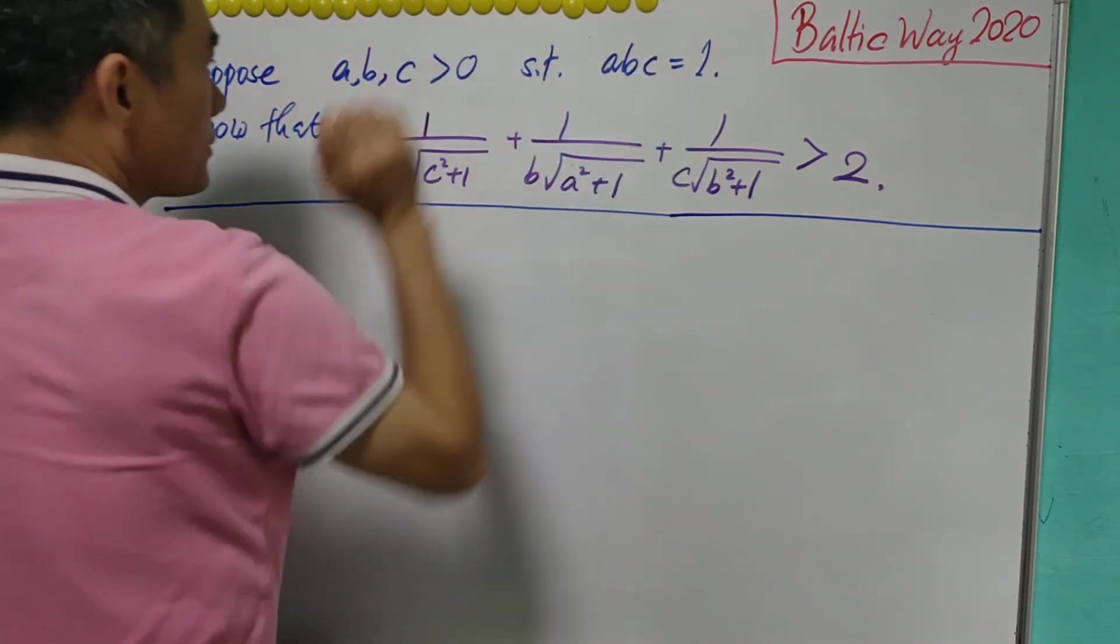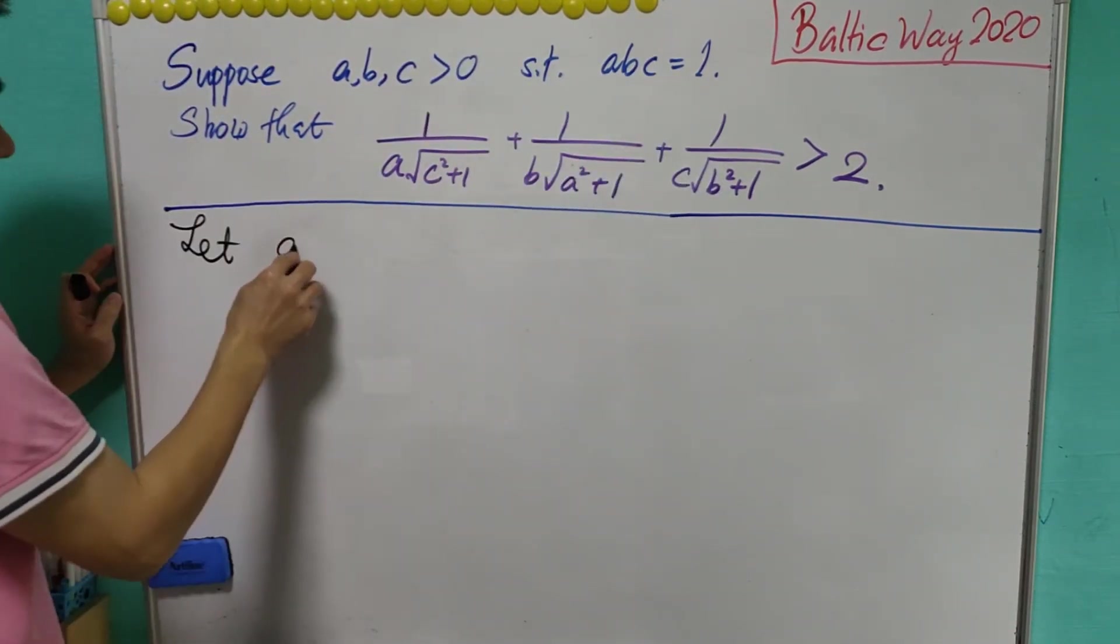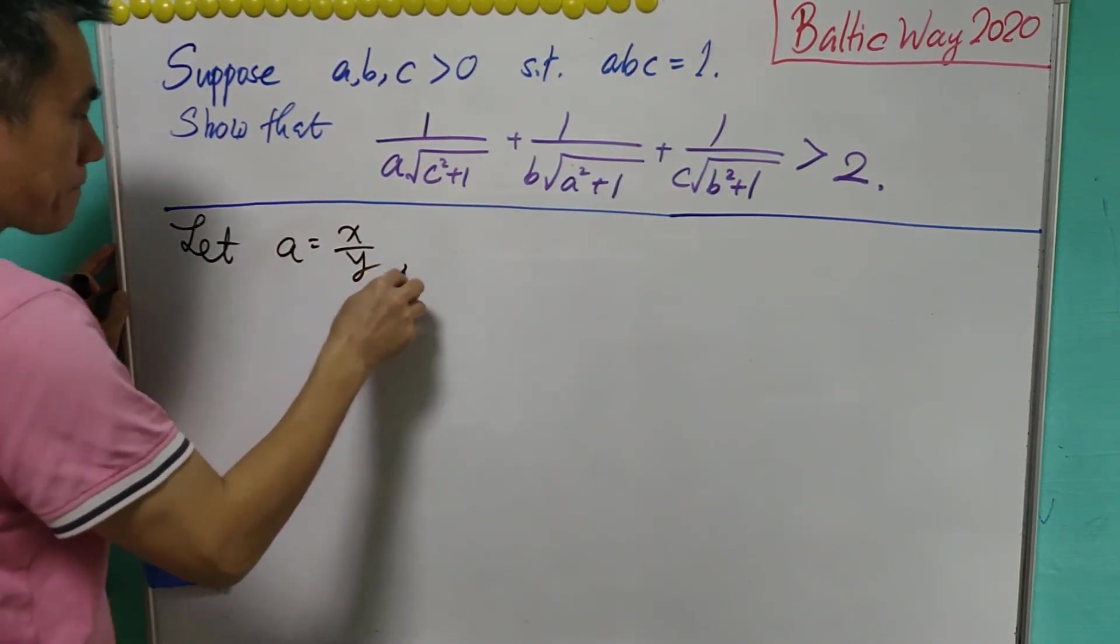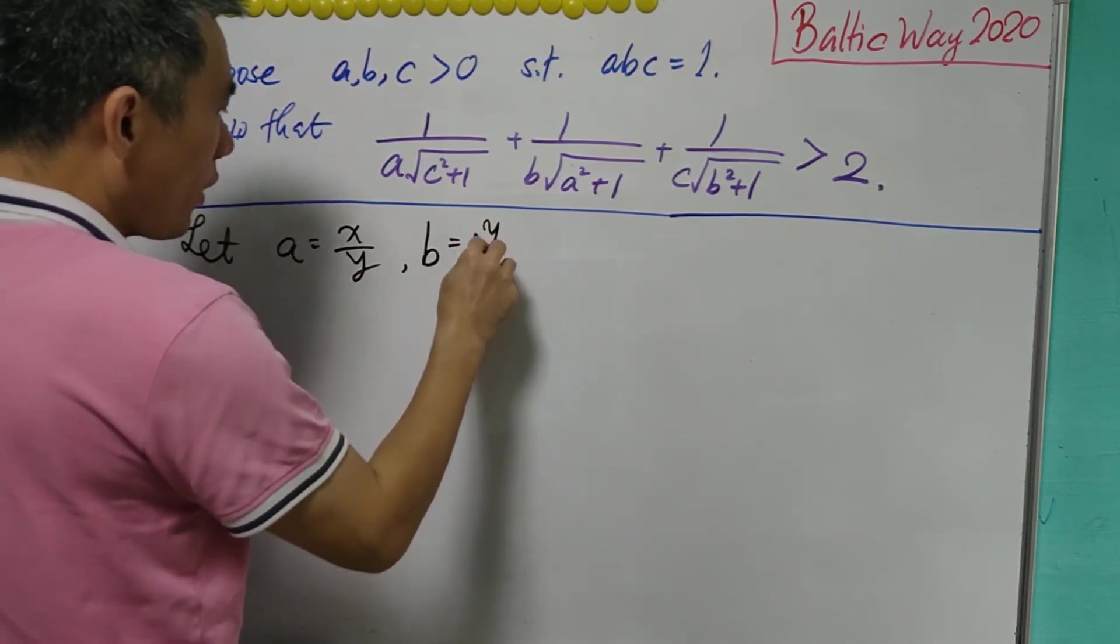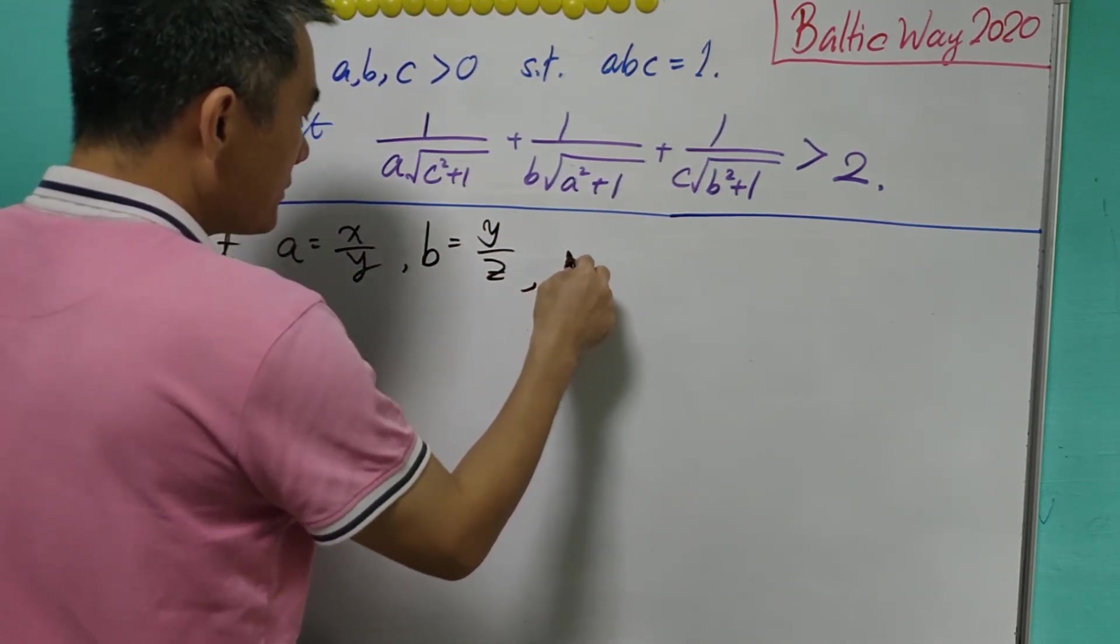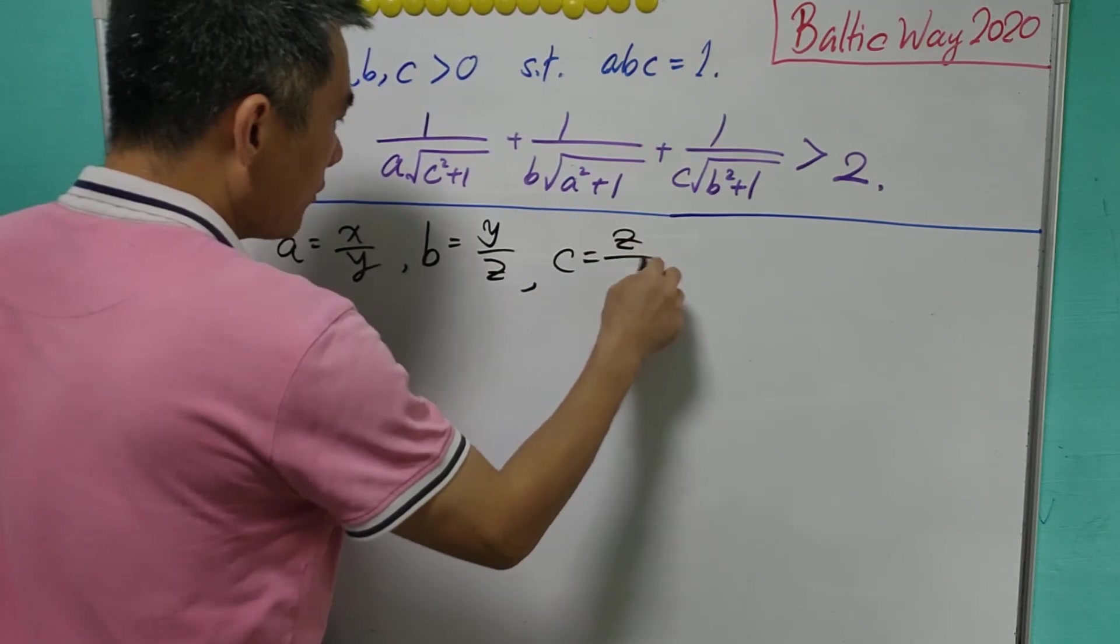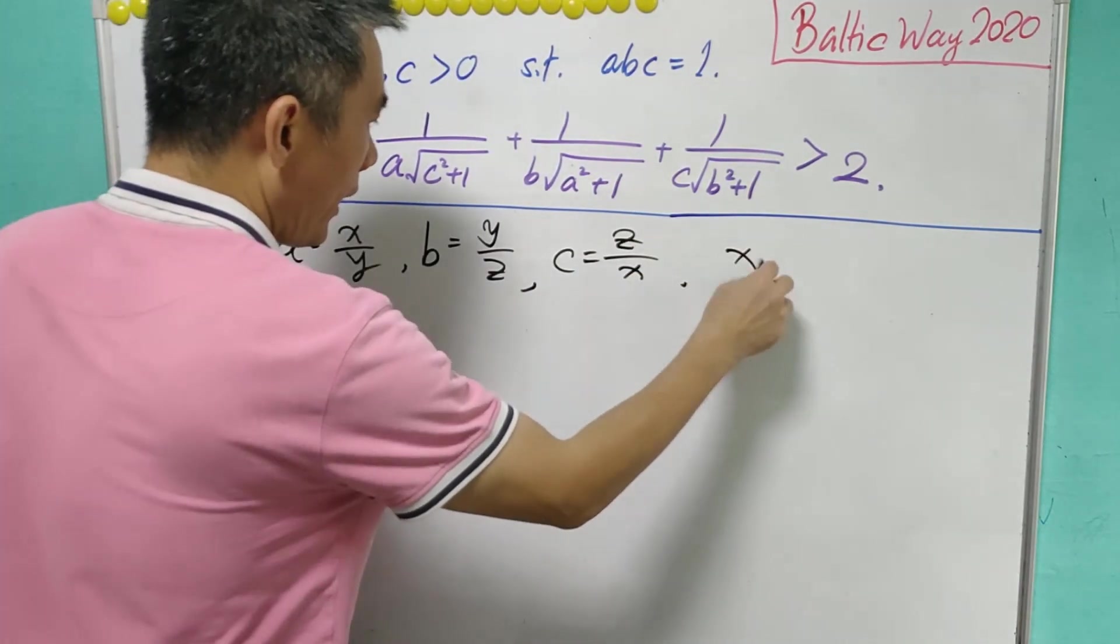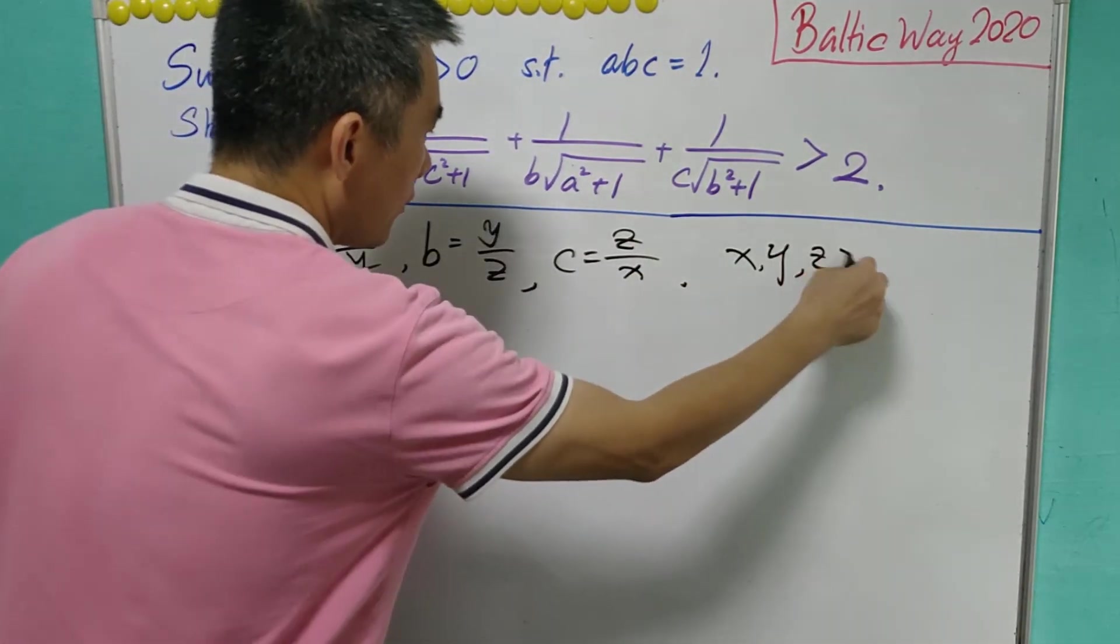Now since abc equals 1, we may let a to be x over y, b equals y over z, and c equals z over x, where x, y, z are all positive.